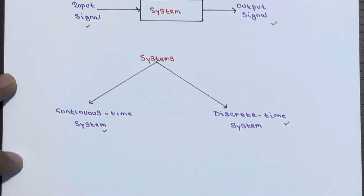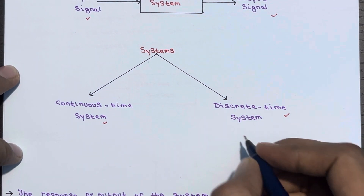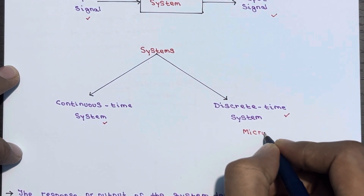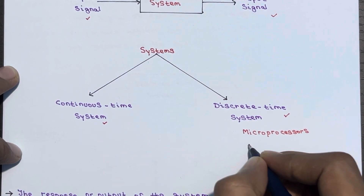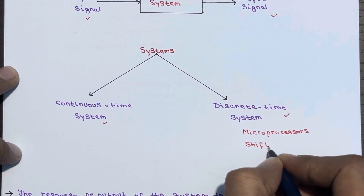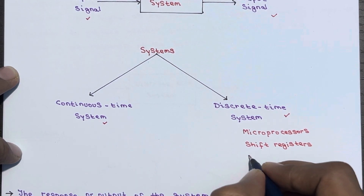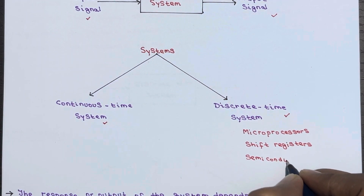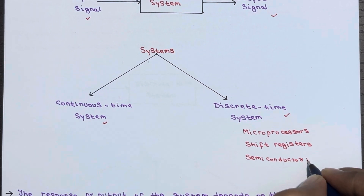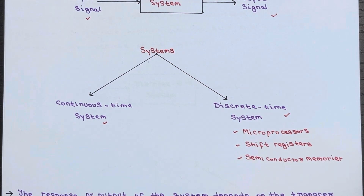Examples of discrete time systems include microprocessors, shift registers, and semiconductor memories. These are some examples of a discrete time system.